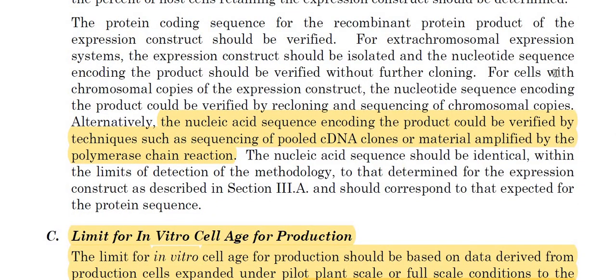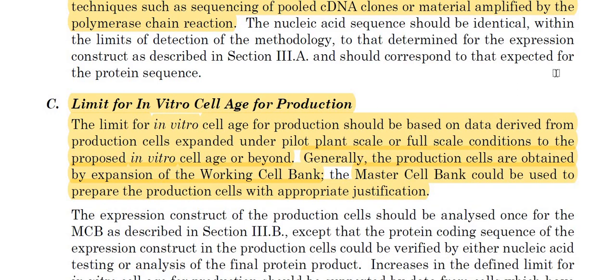The nucleic acid sequences encoding the product could be verified by techniques such as sequencing of pooled cDNA clones or material amplified by the polymerase chain reaction. Regarding the limit of in vitro cell age for production: the limit of in vitro cell age should be based on data derived from production cells expanded under pilot plant scale or full scale conditions to the proposed in vitro cell age or beyond. Generally, the production cells are obtained by expansion of the working cell bank. The master cell bank could be used to prepare the production cells with appropriate justifications.